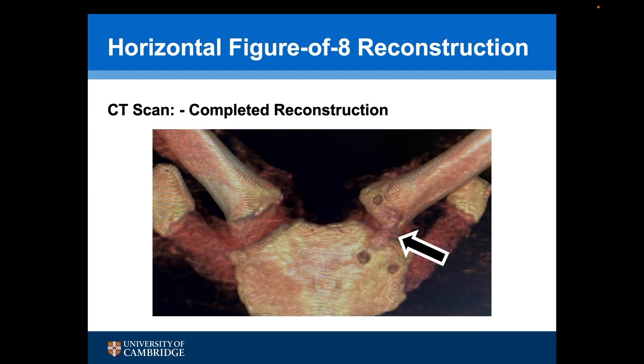This post-operative CT scan shows the joint has been reduced, and we can just see one of the arms of the tendon passing from the superior sternal drill hole to the inferior clavicular drill hole.